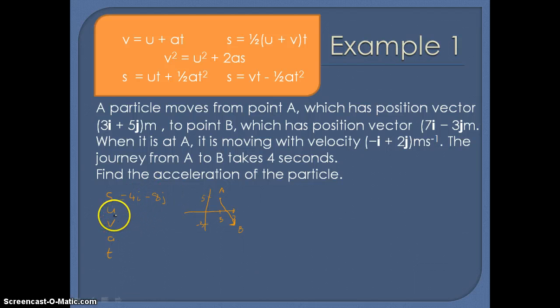Now we have been given U. It's moving at minus i plus 2j. So that is our initial velocity. And we've been told that the journey takes 4 seconds. And we're looking for the acceleration. So we don't know the final velocity. So we're looking for an equation with S, U, A and T. So without V in the equation, we're going to use S equals UT plus half AT squared.